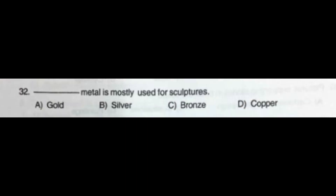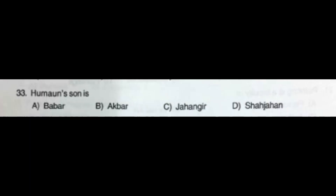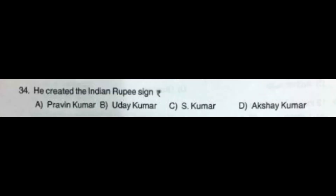Question number 32: Dash metal is mostly used for sculptures — option A: Gold, option B: Silver, option C: Bronze, option D: Copper. The correct answer is option C: Bronze. Question number 33: Humayun's son is — option A: Babar, option B: Akbar, option C: Jahangir, option D: Shahjahan. The correct answer is option B: Akbar.